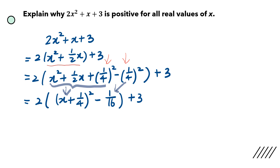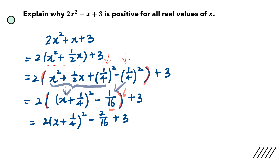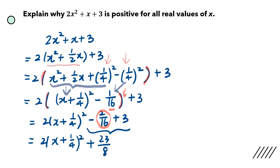A very important thing to note: there should be a bracket here, and there should be a large bracket here — it's very important. Why? Because you have to multiply 2 into your square bracket. If you don't have a square bracket, you may forget to take 1 over 16 times 2. So those brackets highlighted in red — you must make sure they're there. The next step is to use your calculator to work out negative 2 over 16 plus 3, which gives you positive 23 over 8.